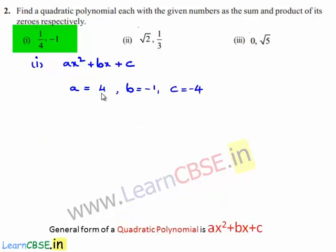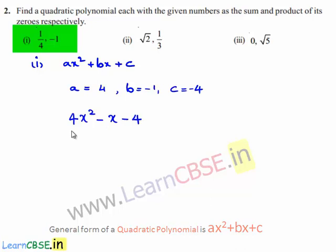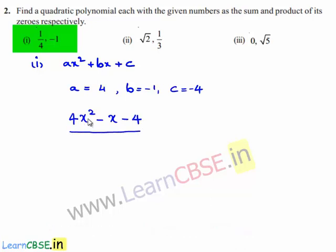Substituting the values of a, b, and c in the polynomial ax² + bx + c, we get the polynomial 4x² - x - 4. Hence, the required polynomial is 4x² - x - 4.